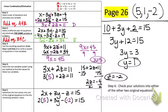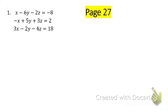Go ahead and label those A, B, C. The first thing we need to do is make a decision — what variable do we want to eliminate? Looking at it, I'm noticing that these automatically eliminate because they're opposite. So let's eliminate x. We're going to label these A, B, and C and go ahead and add A and B together.